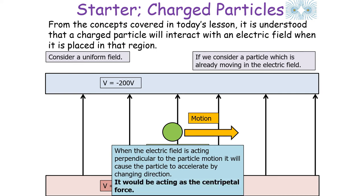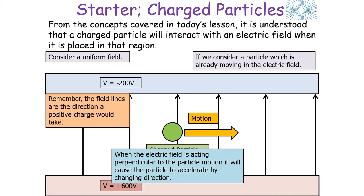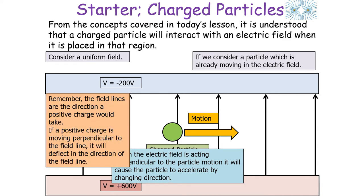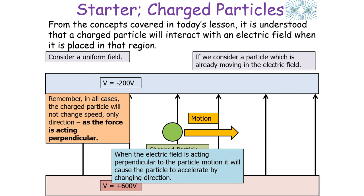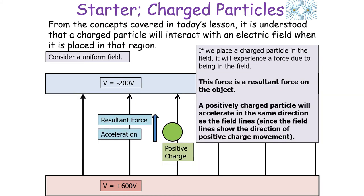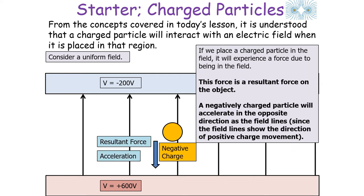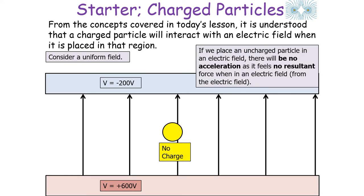If a positive charge moves perpendicular to the field lines it deflects in the direction of the field lines, whilst a negative charge deflects in the opposite direction. When forces act perpendicular to motion, the charged particle does not change speed — it only changes direction. A positively charged particle accelerates in the same direction as the field and a negatively charged particle accelerates in the opposite direction. A neutral object experiences no resultant force and no acceleration.